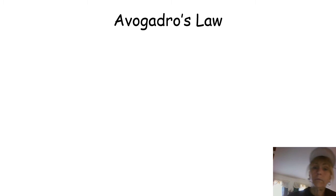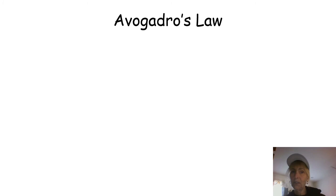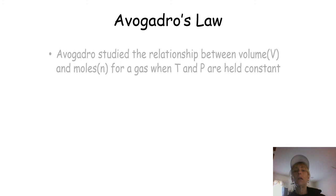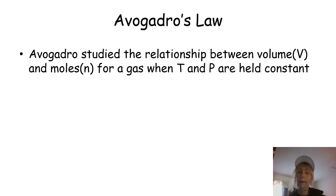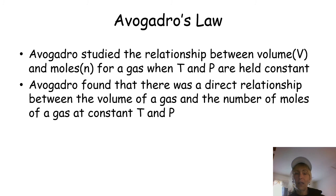Moving on to Avogadro's Law. Remember Avogadro's number: 6.022 × 10²³ particles in one mole of a substance. Avogadro studied the relationship between volume (capital V) and moles for a gas, when temperature and pressure are held constant. He found there was a direct relationship between the volume of the gas and the number of moles, at constant temperature and pressure. Mathematically: volume is directly proportional to moles.